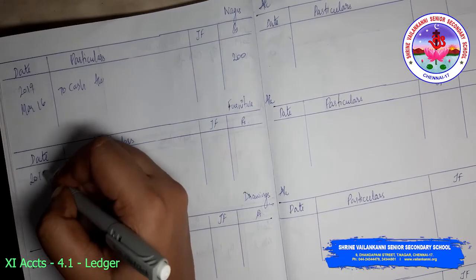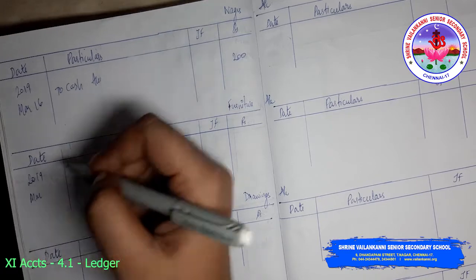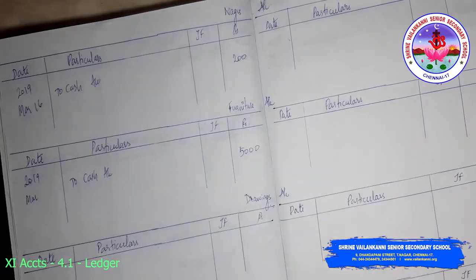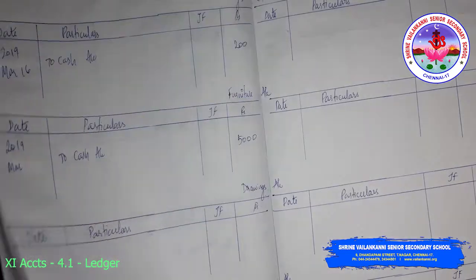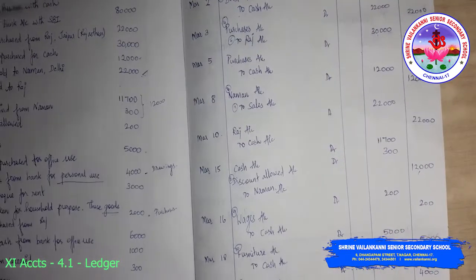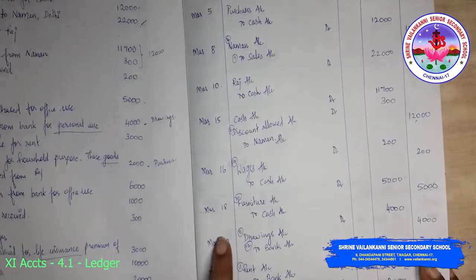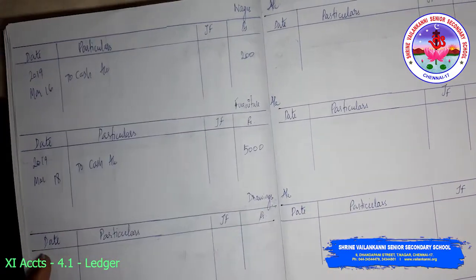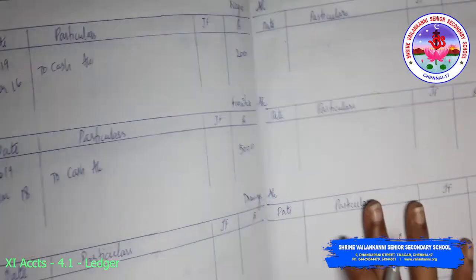2019, March. I think it is 5000 rupees, so furniture 5000. March 18 — I am just writing March 18 here. So furniture account is over.